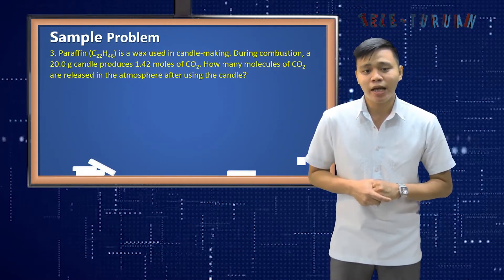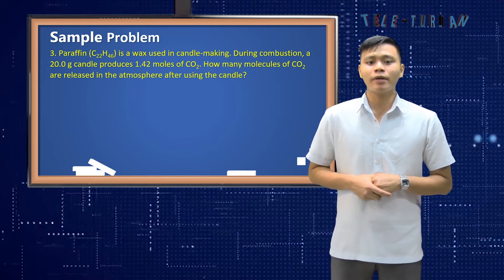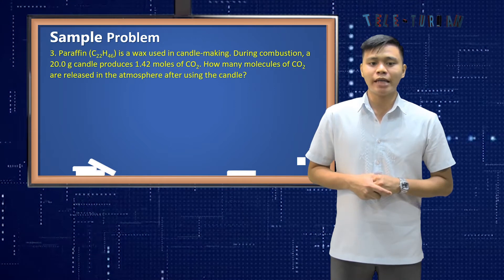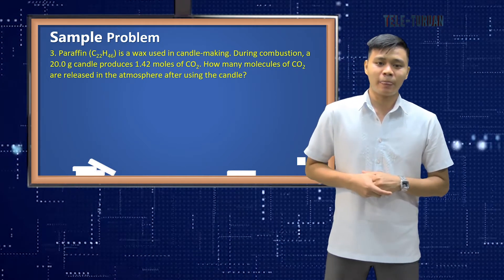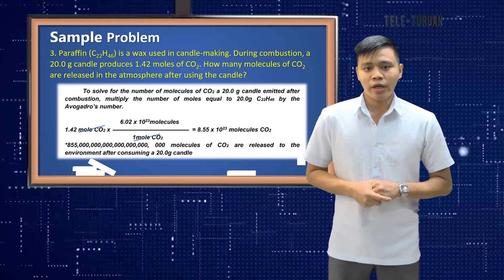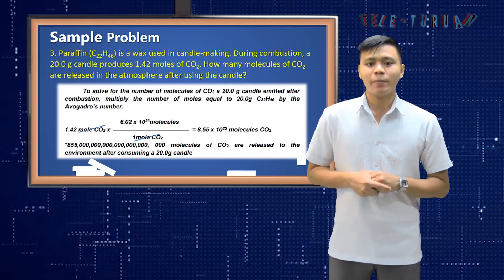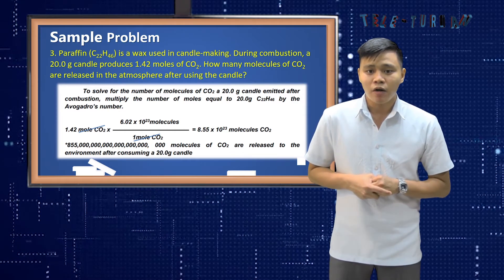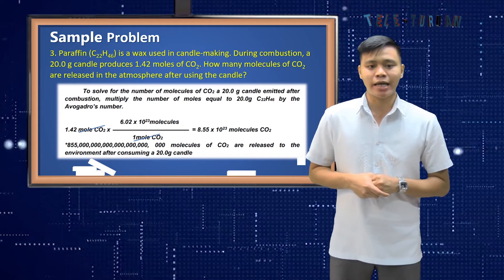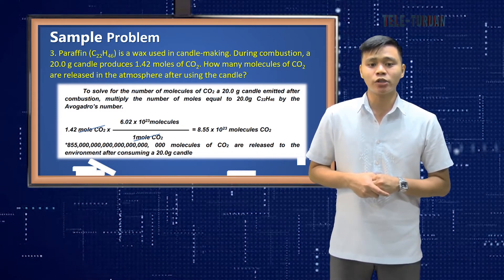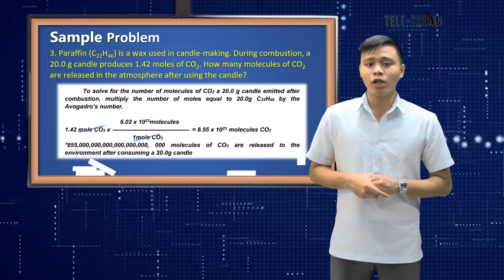Number 3. Paraffin, which has the chemical formula C22H46, is a wax used in candle making. During combustion, a 20 gram candle produces 1.42 moles of carbon dioxide. How many molecules of carbon dioxide are present in the atmosphere after using the candle? To solve: multiply 1.42 moles of carbon dioxide by Avogadro's number — 6.02 × 10²³ molecules divided by 1 mole — which equals 8.55 × 10²³ molecules of carbon dioxide.